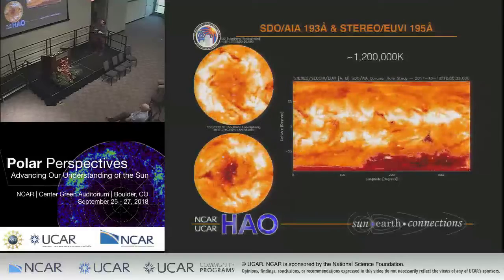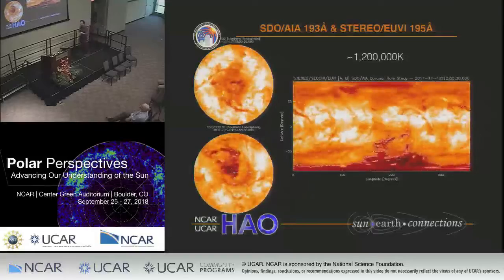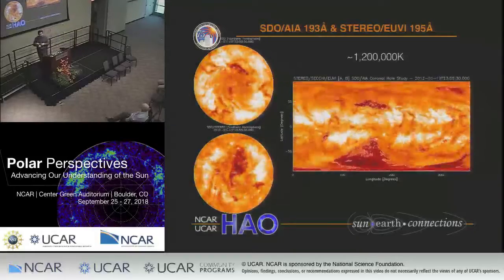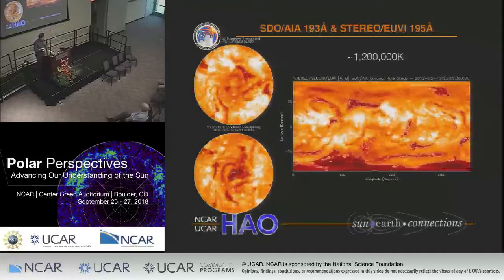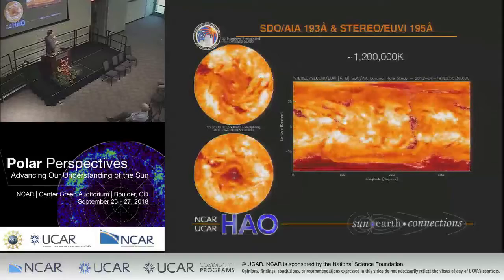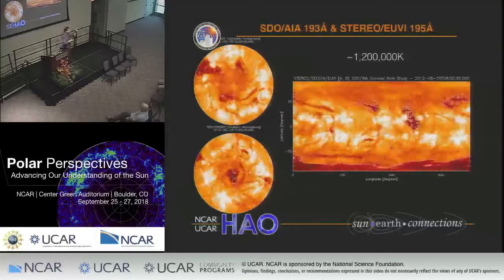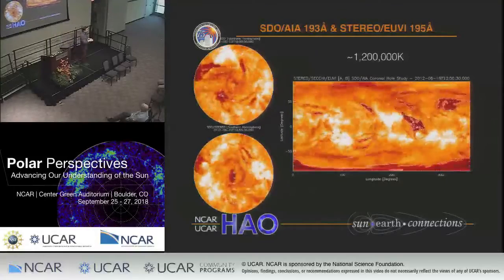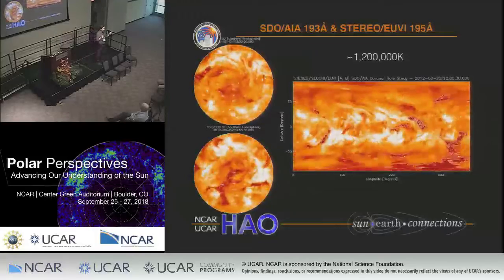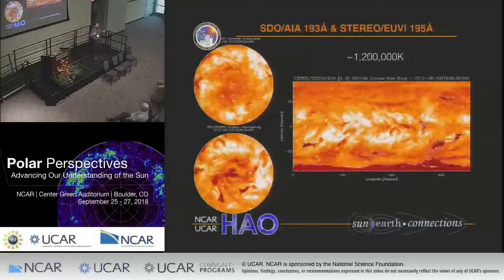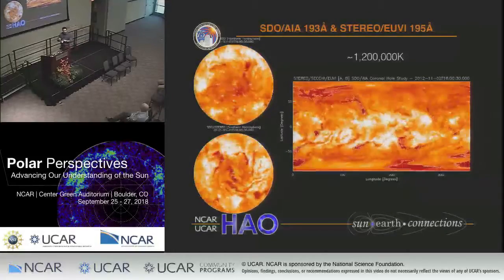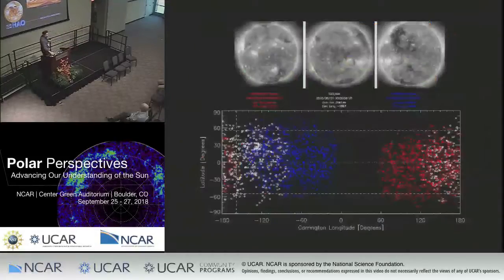There's also a bizarre phenomenon that happens: all of a sudden at a point in the solar cycle, you go from maybe having one longitude that has an active region on it, and within one rotation or two you have five or six active longitudes. And it stays that way and just gets progressively stronger as the cycle goes on. We'll get to that in a second.